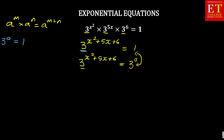So, now we've got the base of 3 on both sides. Therefore, it means x squared plus 5x plus 6 is equal to 0.